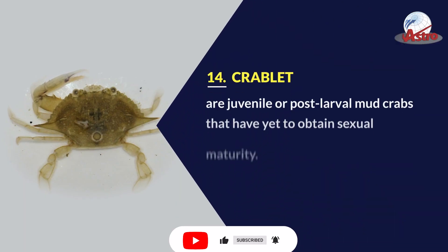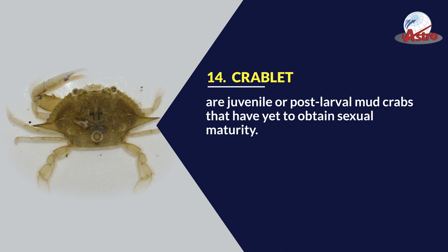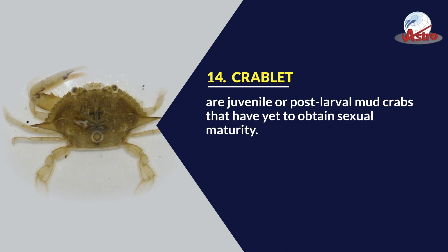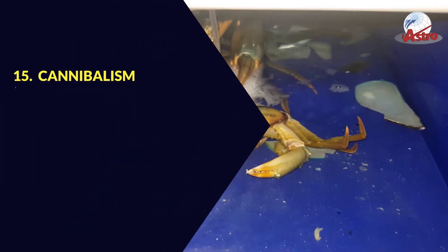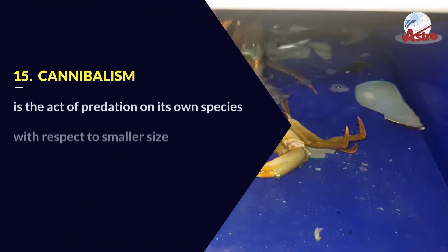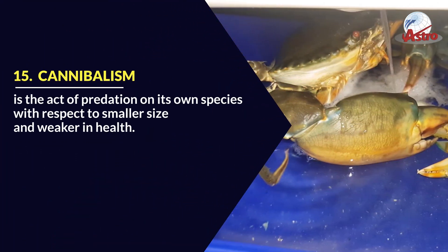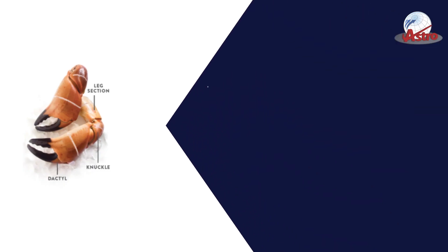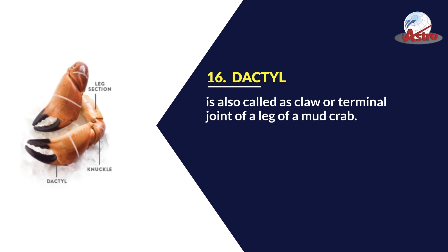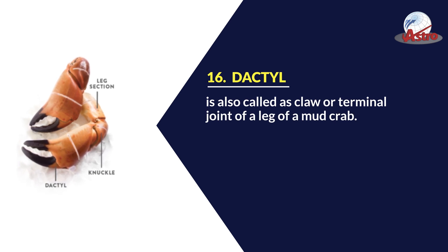Crablets: Are juvenile or post-larval mud crabs that have yet to obtain sexual maturity. Cannibalism: Is the act of predation on its own species with respect to smaller size and weaker in health. Dactyl: Is also called the claw or terminal joint of a leg of a mud crab.